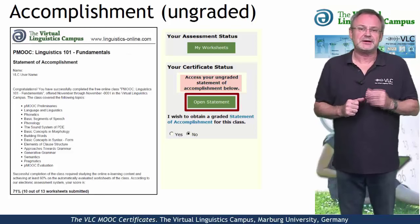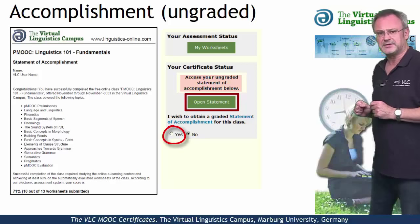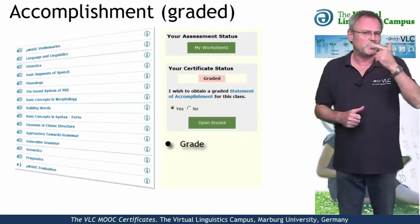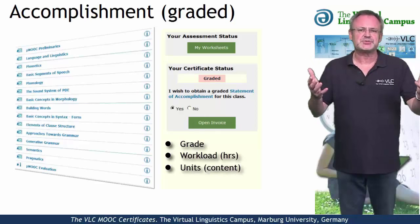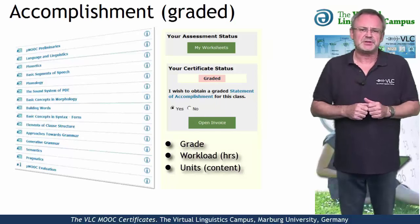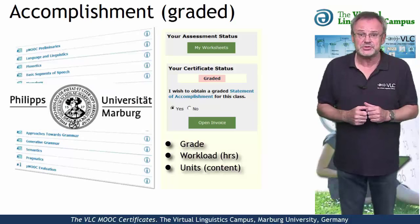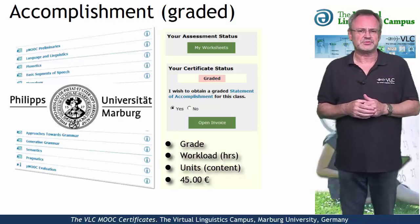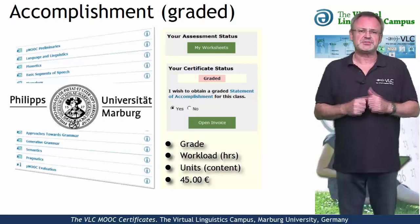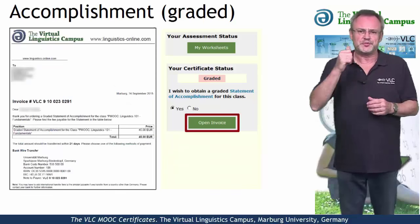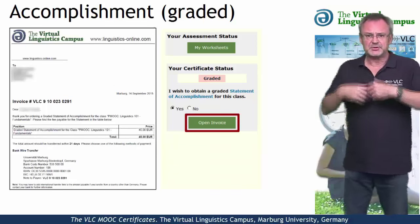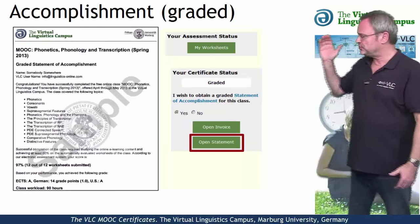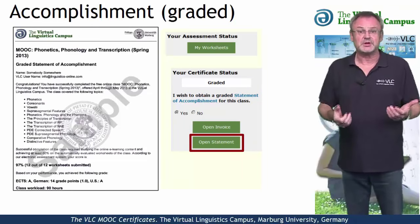If you want to obtain a graded Statement of Accomplishment, select Yes down here. This most advanced option of certification includes your precise grade, the workload in hours, and a complete list of all the tasks you successfully submitted. This graded Statement of Accomplishment is issued by Marburg University in conjunction with the Virtual Linguistics Campus and involves a fee of currently 45 euros. Once you have satisfied the conditions, you first open the invoice and transfer the money to Marburg University, and once your payment has been accepted, you can download your personal graded Statement of Accomplishment via mouse click.